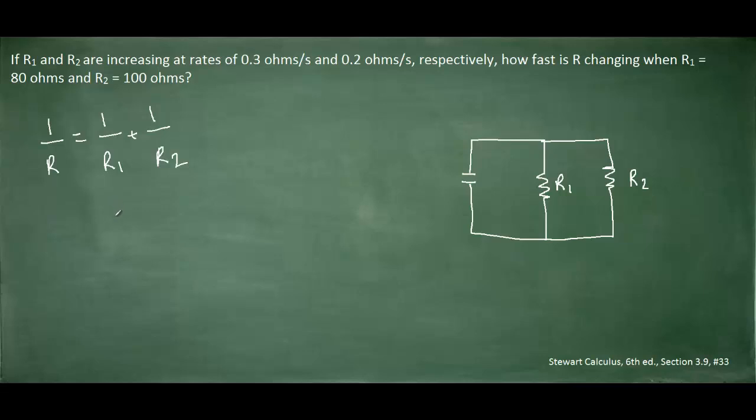Now the equation also tells us that the value of R1 is 80 and the value of R2 is 100. So we can go ahead and actually solve for the value of R by plugging in the known values and solving. So here's the equation after plugging in R1 and R2. And when we solve for R, we obtain the following result.